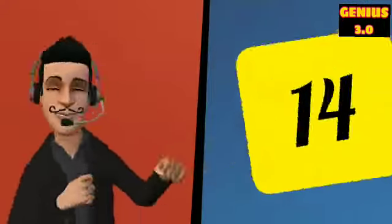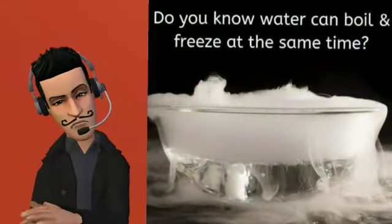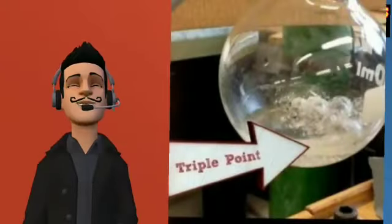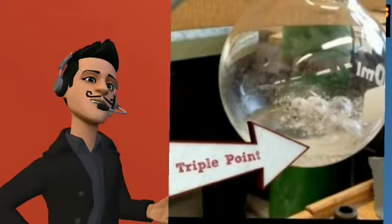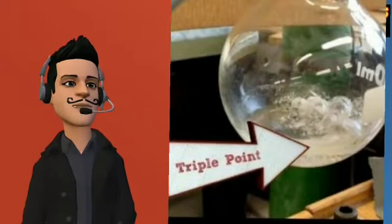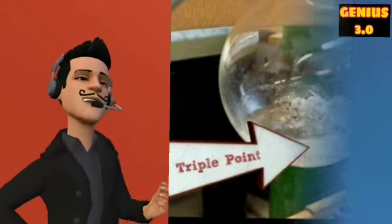The 14th amazing fact is water can boil and freeze at the same time. Yes, it is called the triple point and it occurs when the temperature and pressure is just right for the three phases—liquid, solid, and gas—of a substance to coexist in thermodynamic equilibrium.